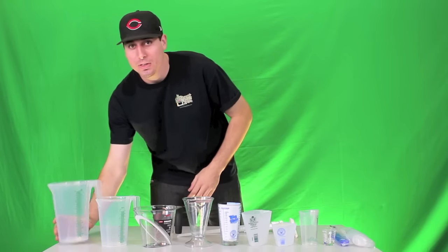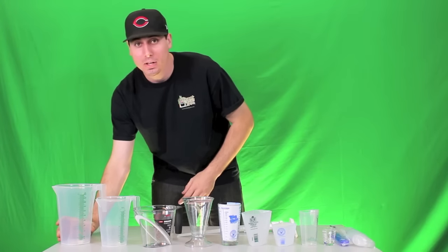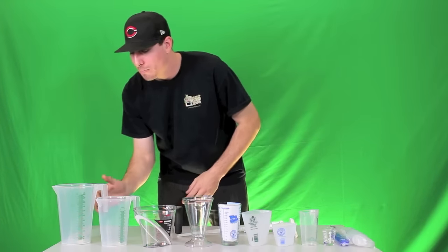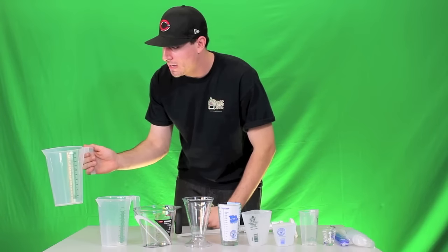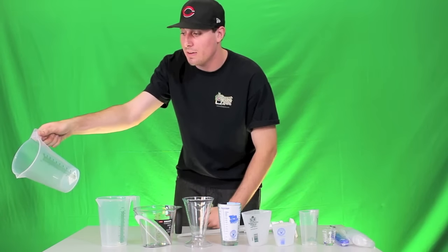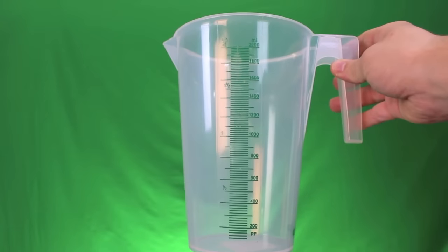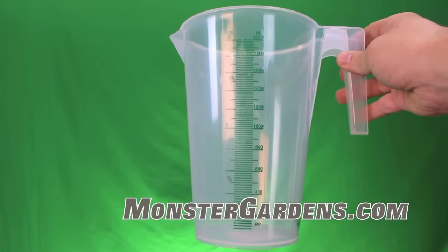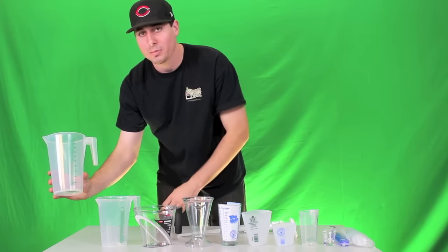So we're going to start here with the 2,000 milliliter or 2-liter measuring pitcher. You can see here it has this nice handle on it with a little spout on the end for easy pouring. It's going to go all the way from 2,000 milliliters at the highest down to 200 milliliters.